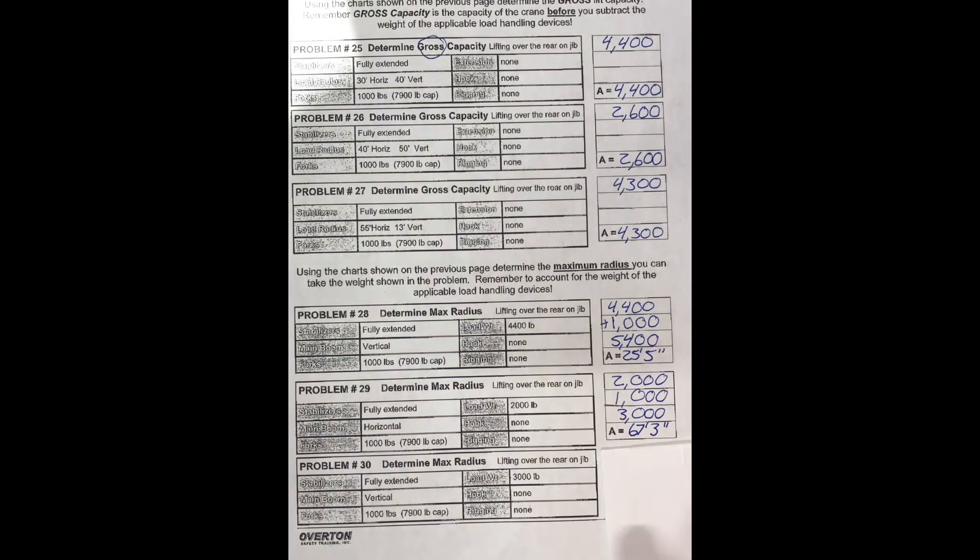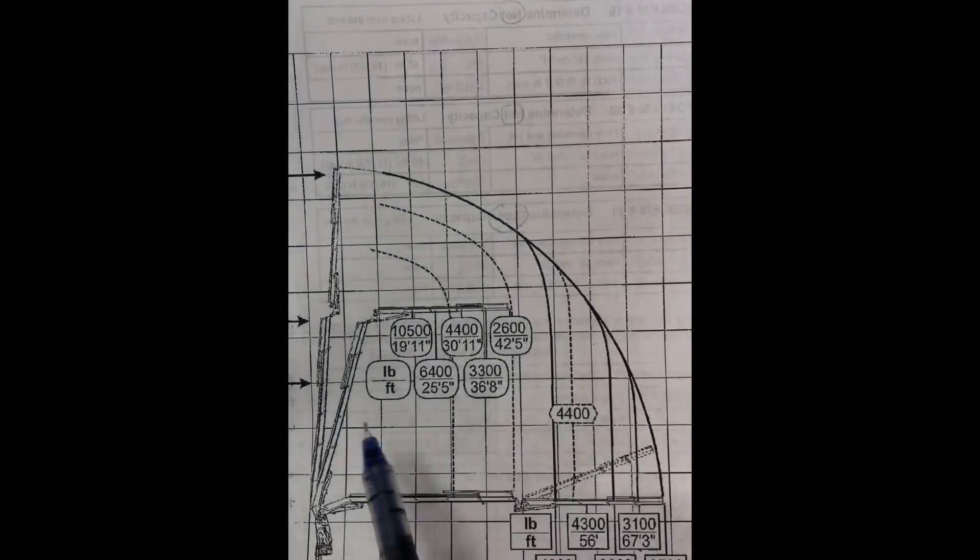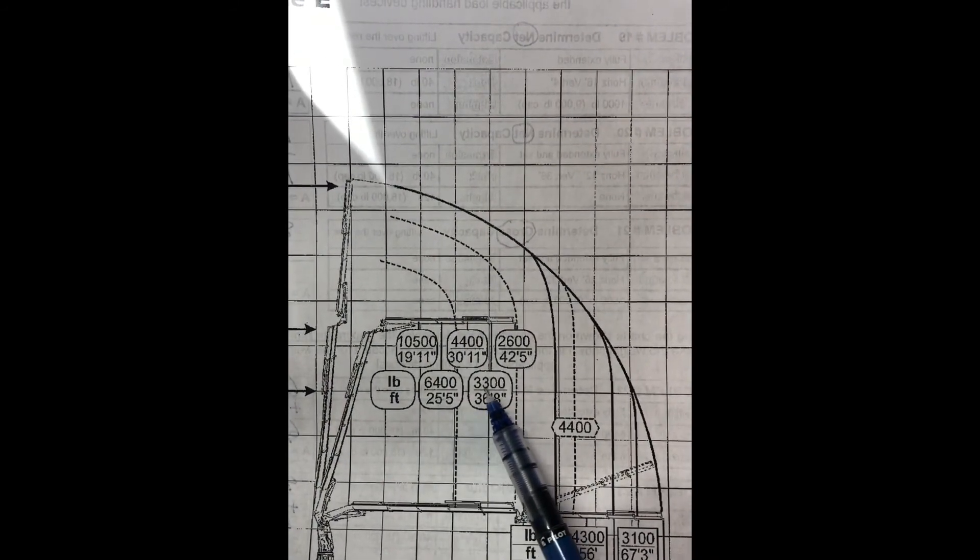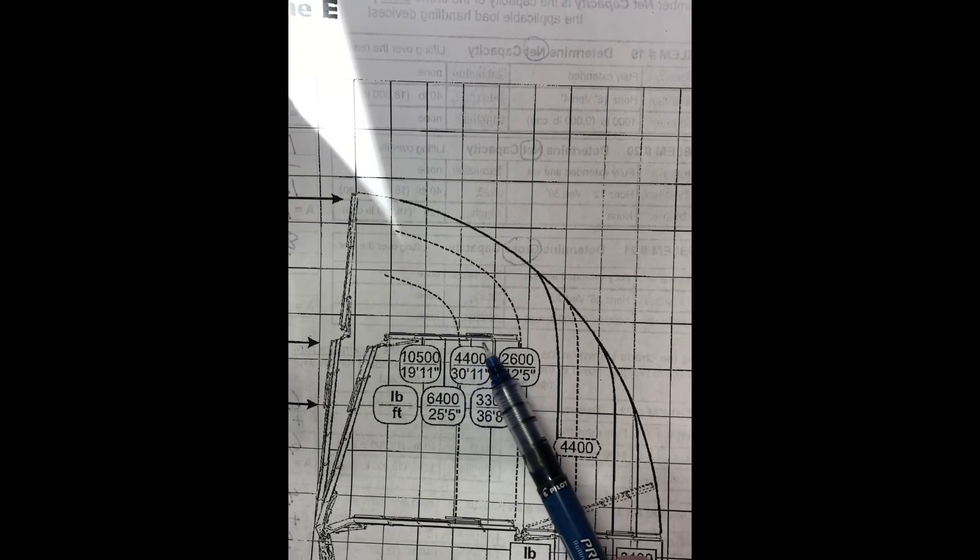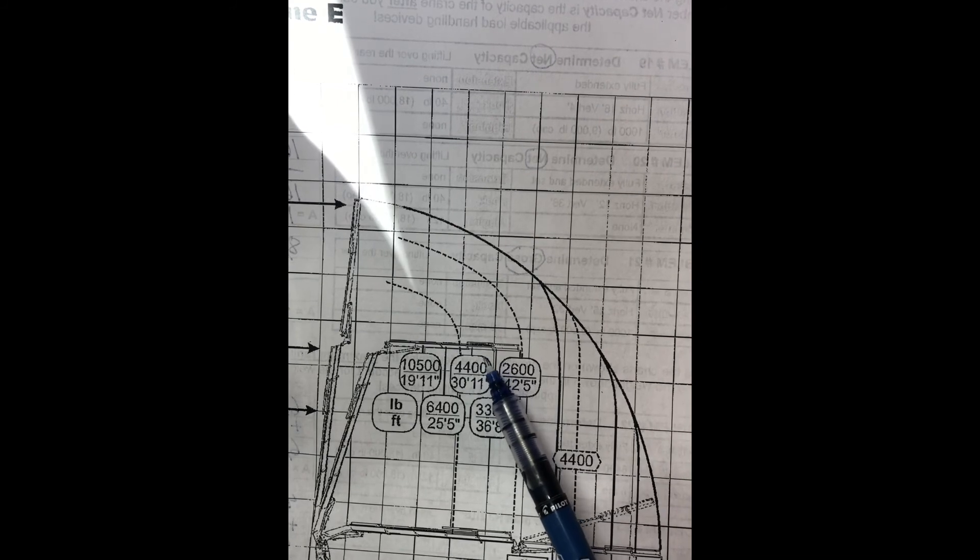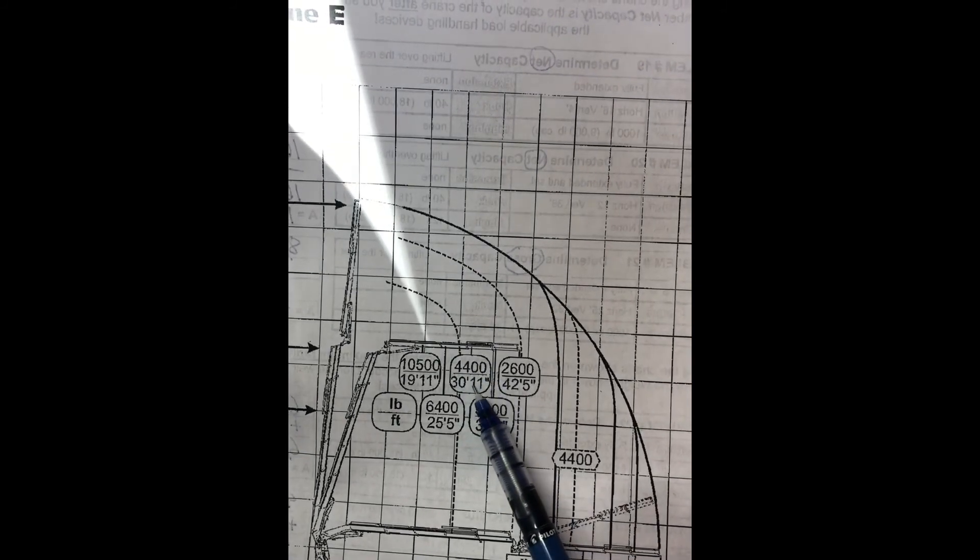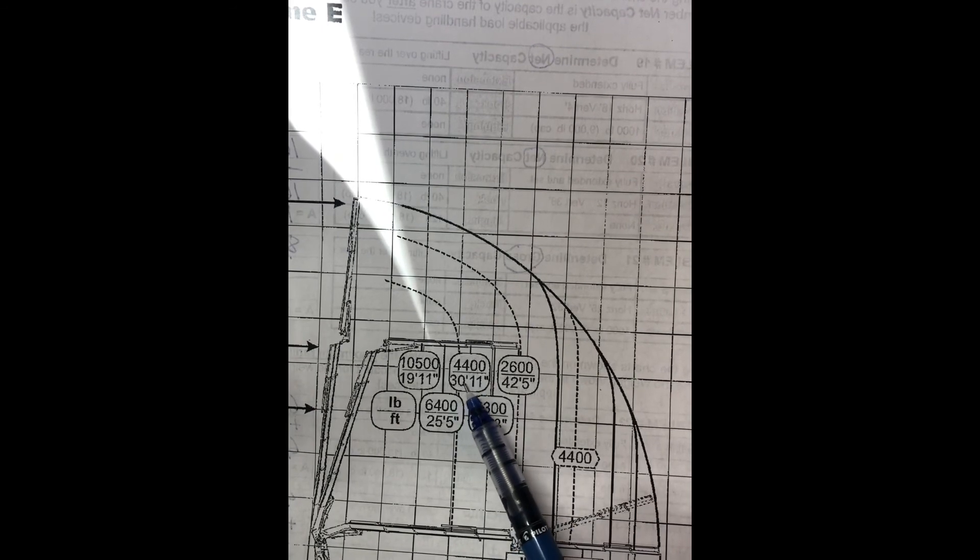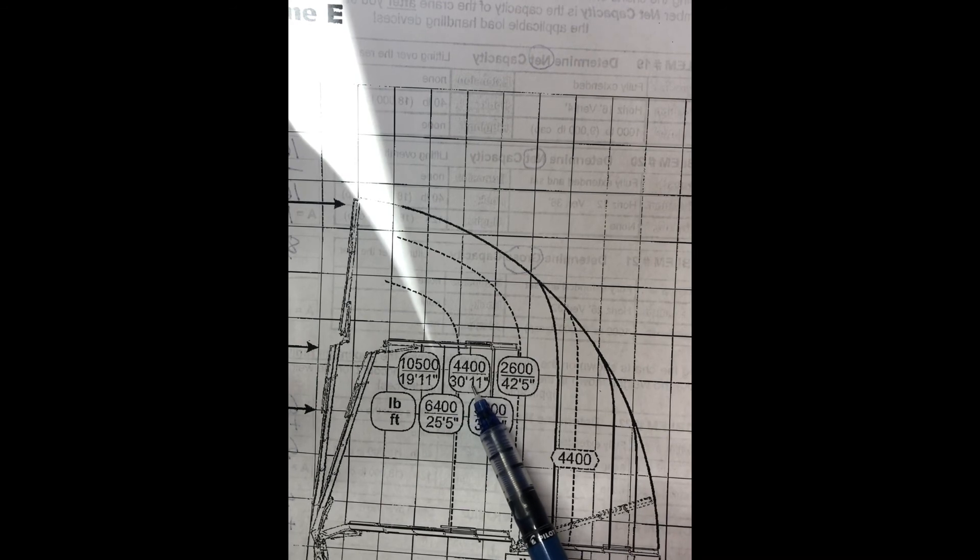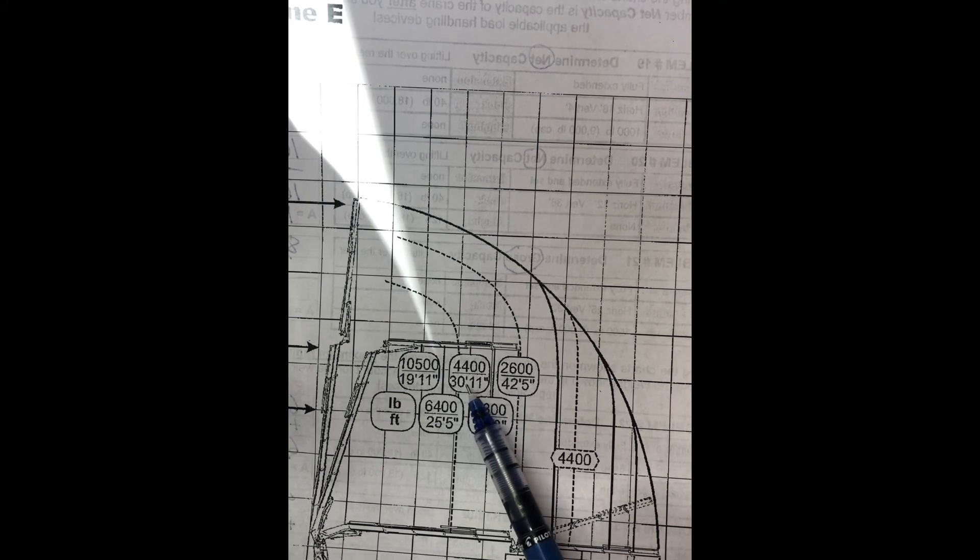The next one. Our load weight is 3,000 pounds. Still looking for max radius. Forks are 1,000. Obviously total 4,000. We're going vertical. So we're going up. 4,000 pounds. Here we have 3,300. Here we have 4,400. 4,000 is going to lie in between there. Obviously 4,000 is too heavy to get here. So we have to use this 4,400. So it's 30 feet, 11 inches.